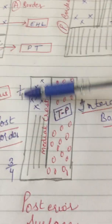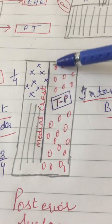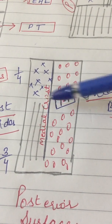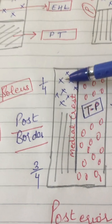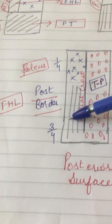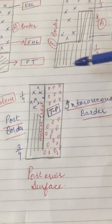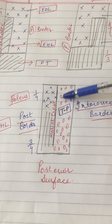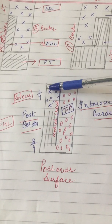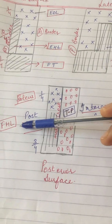From the grooved part arises the tibialis posterior. The posterior surface is between the interosseous border and the posterior border. The medial crest divides it into two parts: the anterior grooved part, from which tibialis posterior arises, and the posterior part. The posterior part is further divided — the upper one-fourth gives origin to soleus, and the lower three-fourths give origin to flexor hallucis longus.